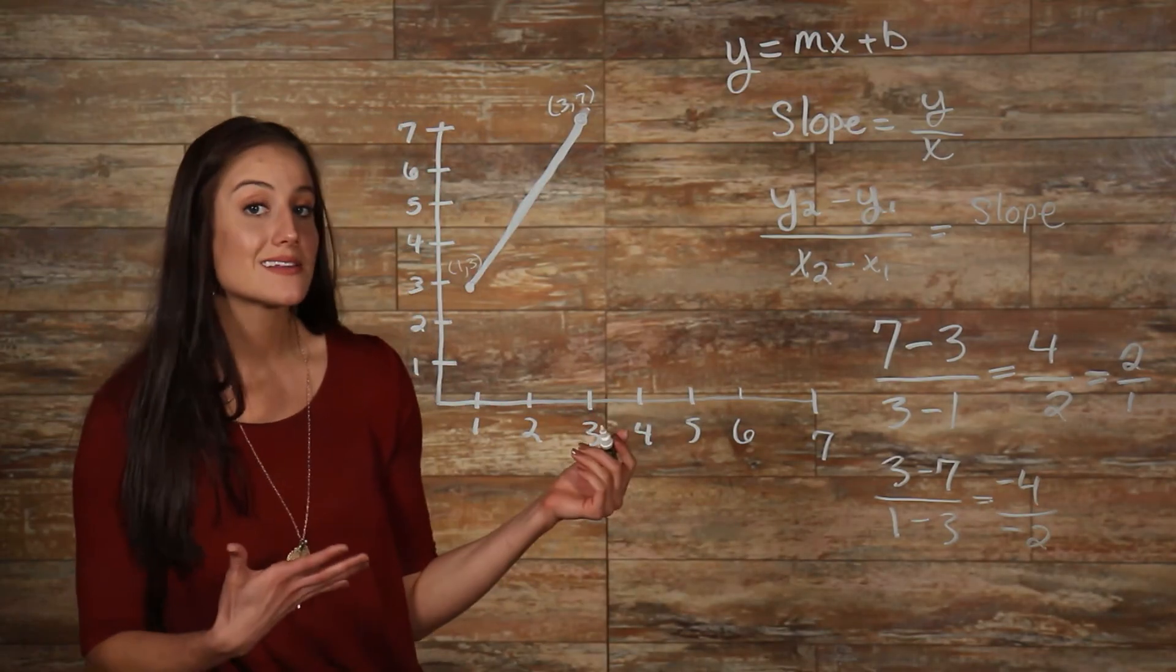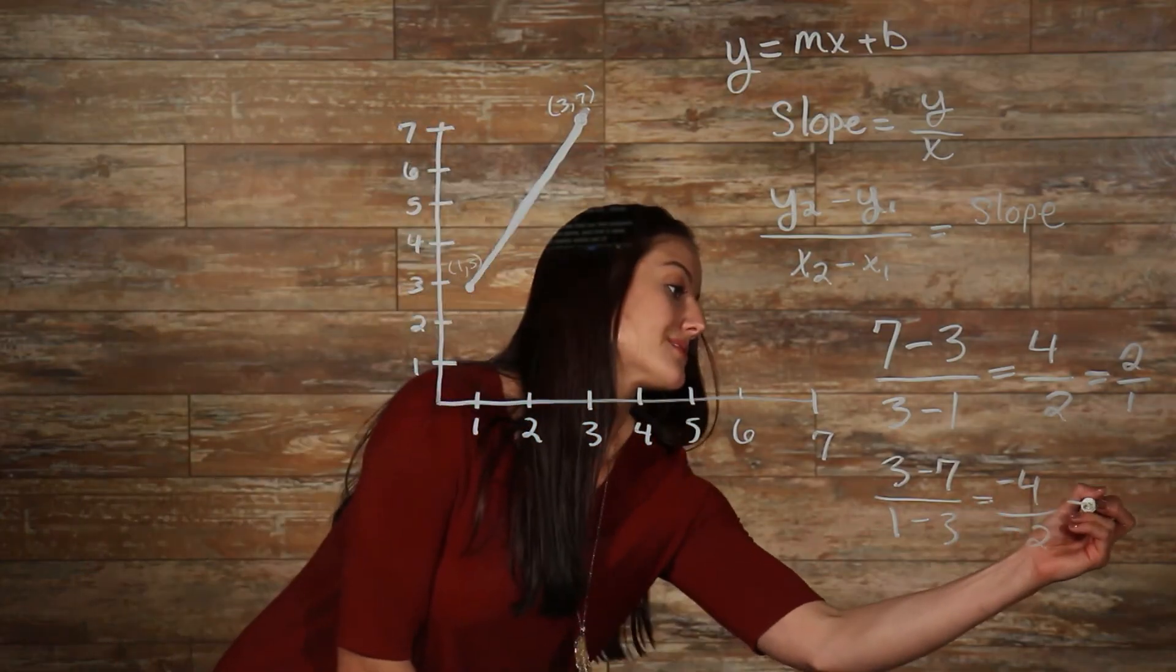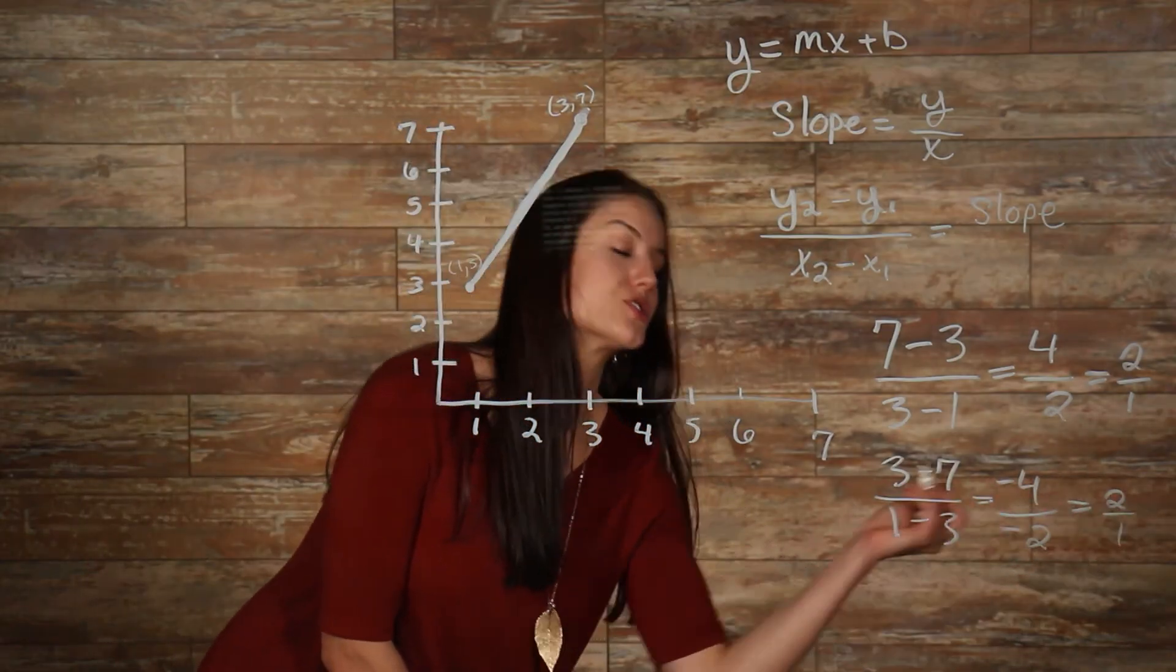And we have a negative divided by a negative, we get a positive, so this simply reduces to 2 over 1, or 2.